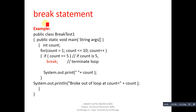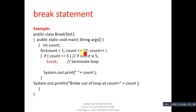Break is used to terminate the execution of a loop or switch statement. Here is an example in which I have used a for loop, and inside the for loop I have used break to terminate its execution. The class name is BreakTest. Inside main, a for loop starts from 1, with condition less than or equal to 10, and count increments each iteration.